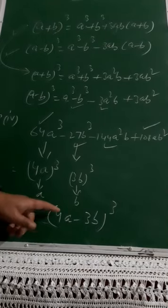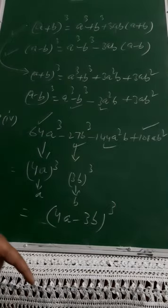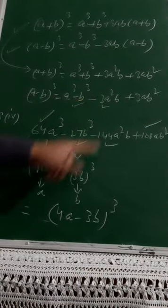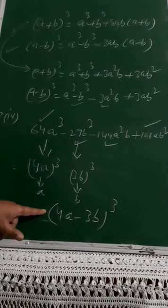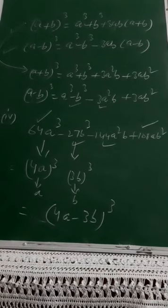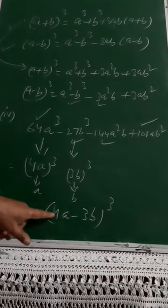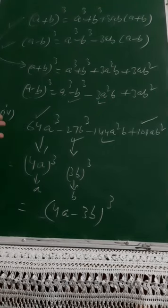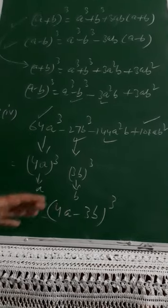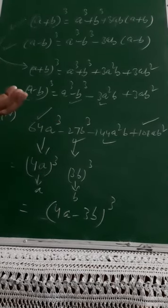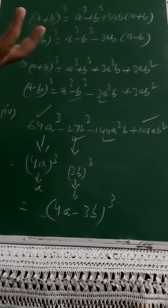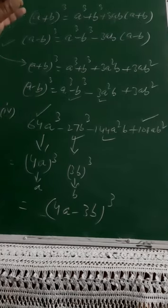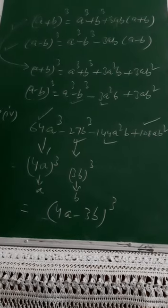Expanding (4a-3b)³: a³-b³-3a²b+3ab², substituting: 4a³ = 64a³, 3b³ = 27b³, then -3×(4a)²×(3b) = -3×16a²×3b = -144a²b, and +3×(4a)×(3b)² = +3×4a×9b² = +108ab². This cross-checks correctly. If all four terms are positive, it's always (a+b)³; if two are positive and two negative, it's (a-b)³. Carefully identify what a and b are.